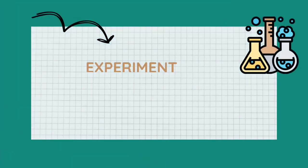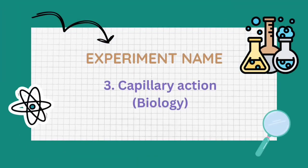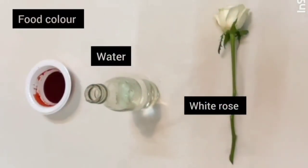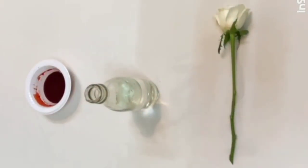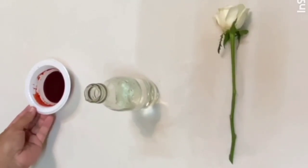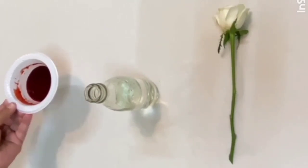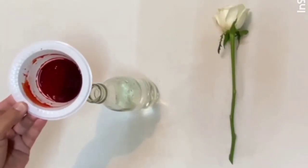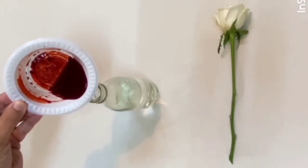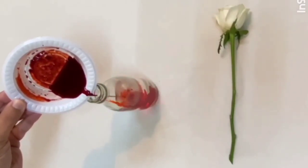Our last experiment is capillary action. These are the ingredients required. We'll start the experiment by adding the food color into the water. Now we'll immerse the white rose into this colored water.